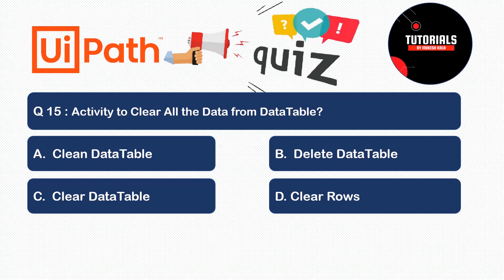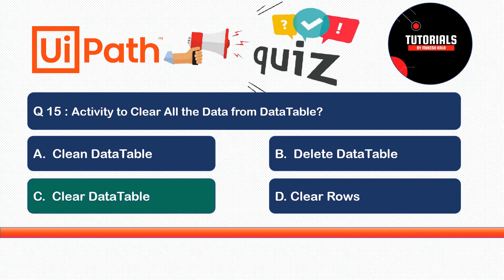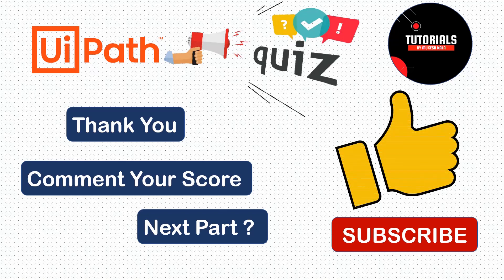Question 15 (final): Which activity is used to clear all data from a Data Table? Options: A) Clean Data Table, B) Delete Data Table, C) Clear Data Table, or D) Clear Rows. The correct answer is Clear Data Table. Drag and drop this activity, provide a Data Table name, and it will clear all data. That's all for this video — comment your final score and any quiz topics you'd like to see. Please subscribe to the channel. Happy automation!